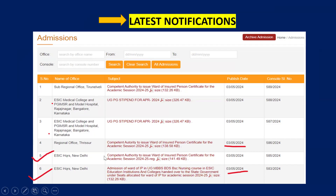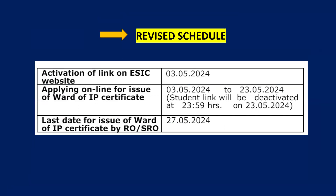Here you can see two latest notifications dated 3rd May. These two notifications are related to the rescheduled dates of ESIC Ward of IP Certificate application process. This is the revised schedule — activation of the link on the ESIC website is available from 3rd May 2024. Applying online for issue of Ward of IP Certificate is from 3rd May 2024 to 23rd May 2024. The student link will be deactivated at 23:59 hours on 23rd May.